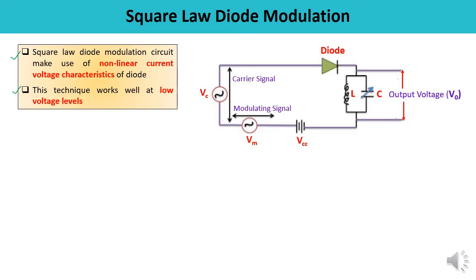Looking at the circuit diagram for square law diode modulation, there is a carrier signal Vc and a modulating signal Vm, and both signals are applied across the diode. A DC battery Vcc is connected across the diode to obtain a fixed operating point on the V-I characteristic. When two different frequencies — the carrier frequency and the modulating frequency — are passed through this non-linear device, the process of amplitude modulation takes place.